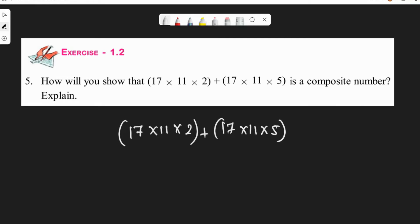When we see this kind of sum, we should see which numbers are common in both terms. The numbers which are common in both terms are 17 and 11. So let's take 17 and 11 common out of the two terms.